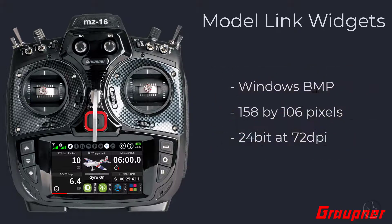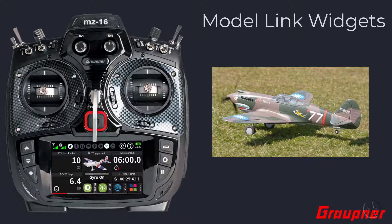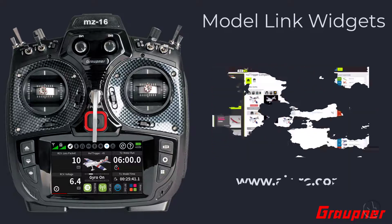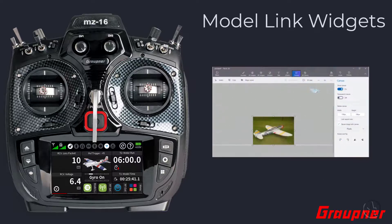The image format and size needed for the Graupner mz16 or mz32 radios are Windows BMP, 158 by 106 pixels, 24-bit at 72 DPI. You can get your model image from a picture on your phone, the internet, or you can download ready-made images for your Graupner radio at AirRC. If you make your own image, you will need to use a graphics program like Photoshop, Microsoft Paint 3D, or any other program that supports saving images in Windows BMP format.